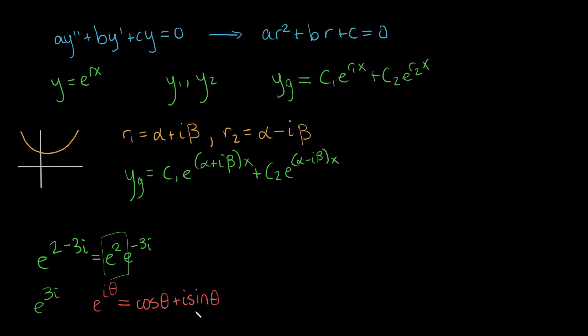I'm going to assume you understand how this works. If we take that and we plug it in, what we get is that the general solution is some constant times e to the alpha times x. Now we're going to break it apart. This part is going to be e to the i beta x. If we plug in beta x as theta, then what we get is the cosine of beta x plus i times the sine of beta x.